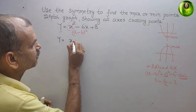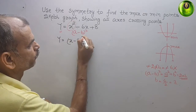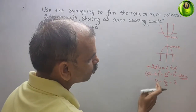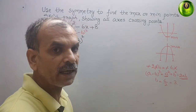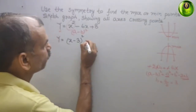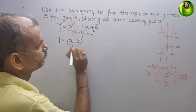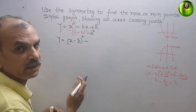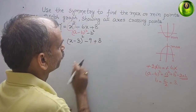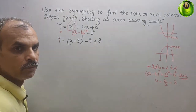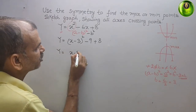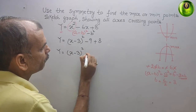So we write x minus 3 whole square. When we expand a minus b whole square, the b squared term is extra, so we subtract it. Minus b squared is minus 3 squared, which is minus 9, plus 8. Solving this, y is equal to x minus 3 whole square minus 1.